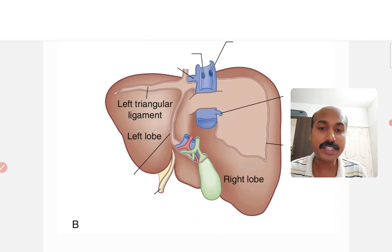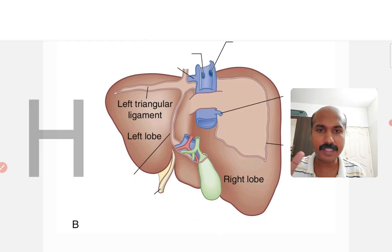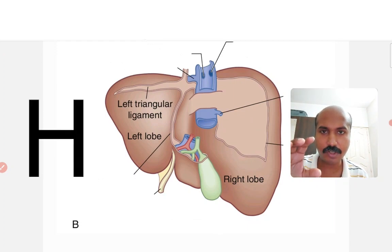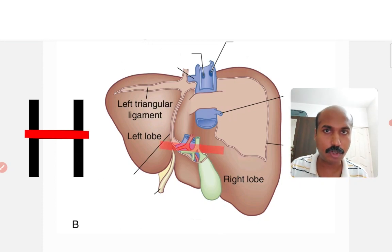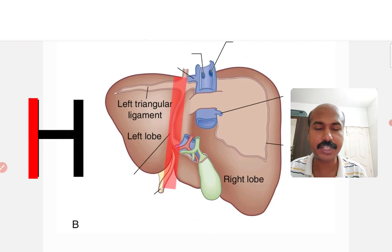We are continuing with the structure seen on the visceral surface of the liver. There is an H pattern of structures. We have completed the structure seen on the porta hepatis, or the crossbar of that H. Now we are continuing with the structures on the left side of that H-shaped pattern.